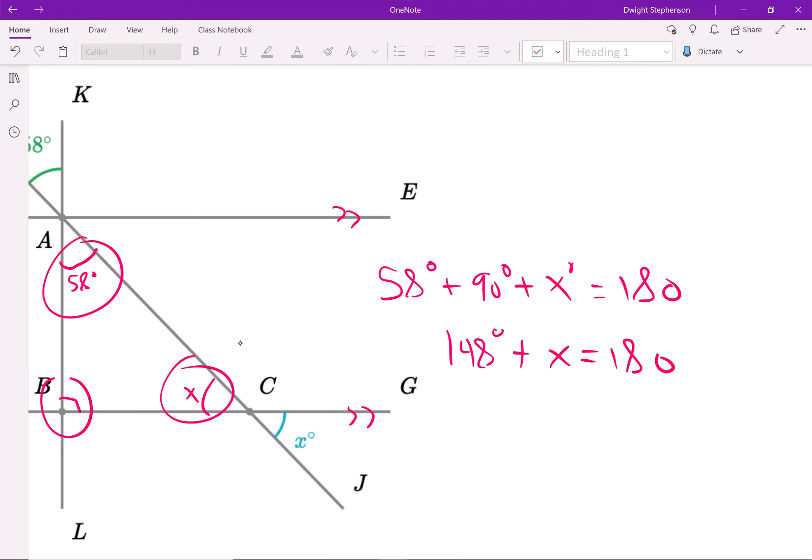Then you can just think about, well, what do I need to add to 148 to get to 180? Well, I need to add 32. So x is actually 32 degrees. You could also just subtract 148 on both sides to get that 32. So that's the answer to that one.